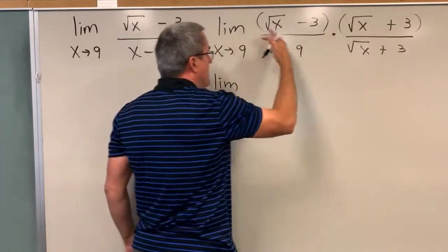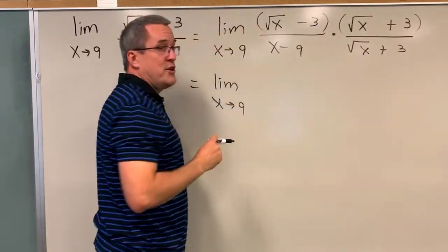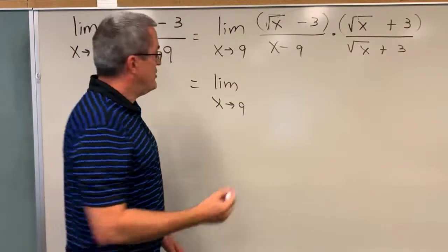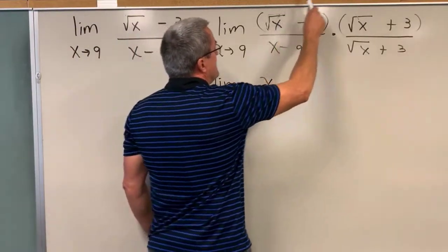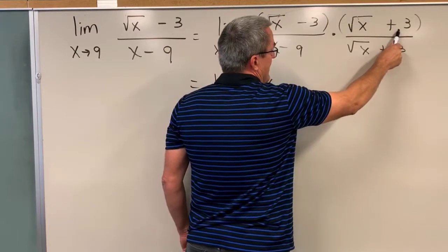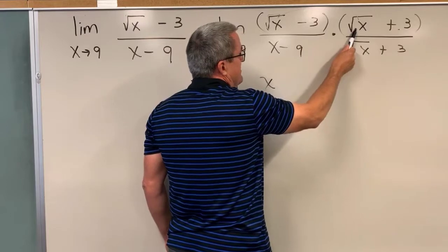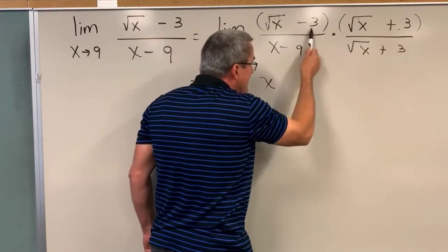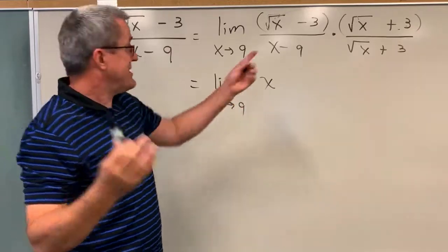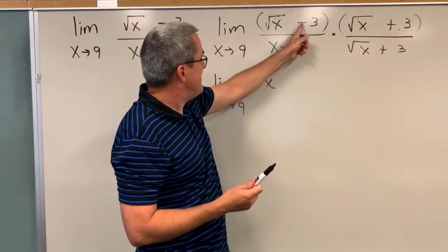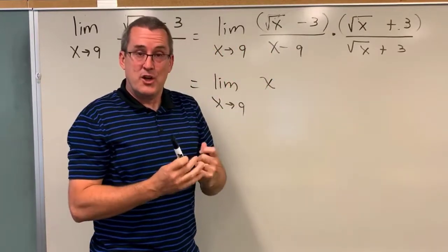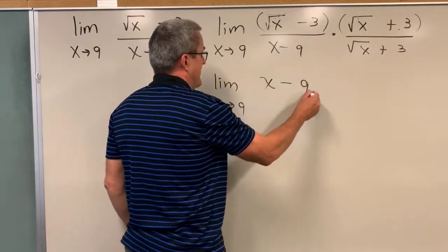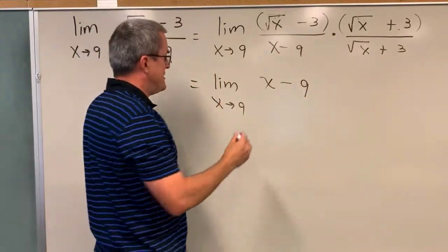Now imagine multiplying this out. When we multiply the numerator using the distributive property: the square root of x times the square root of x produces x; the square root of x times positive 3 and negative 3 times the square root of x — those two inner terms are positive 3√x and negative 3√x, which cancel to 0. That's exactly why I chose plus instead of minus, so those terms would cancel. And finally, negative 3 times positive 3 gives negative 9. So the numerator multiplies out to produce just x minus 9.